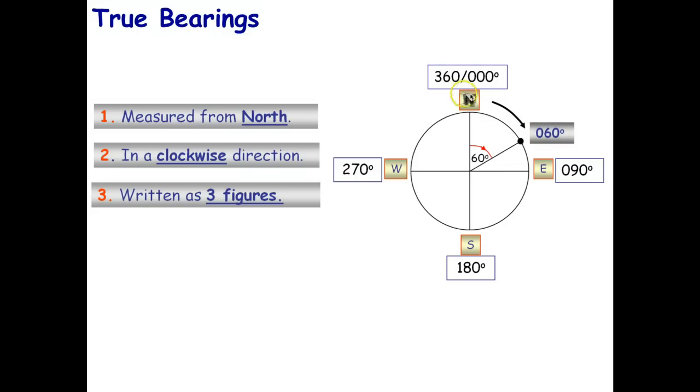Bearings start at the north, that's zero degrees, measured in a clockwise direction, that's 60 degrees, east is 90 degrees, south is 180, west is 270, and then back to zero once again.